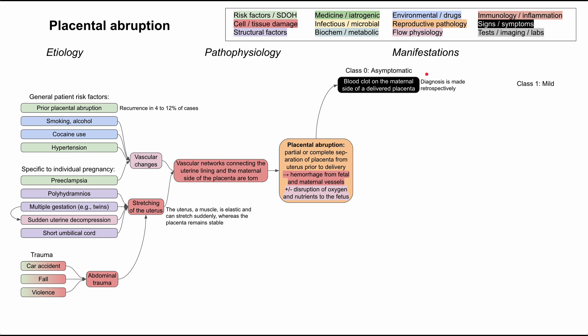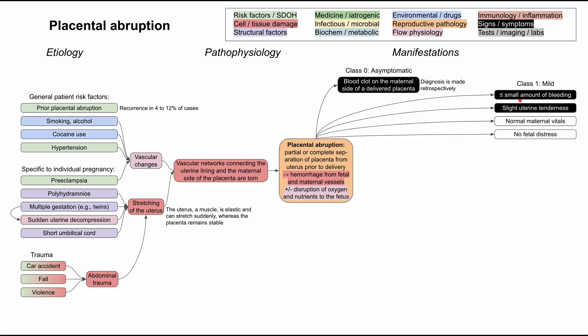Class one is considered mild. In class one, you have up to a small amount of bleeding, and you might have slight uterine tenderness. It's possible with all gradations of placental abruption to have no vaginal bleeding, but in class one you could have up to a small amount. There are also pertinent negatives in the mild class: mom has normal vital signs — she doesn't have hypotension or tachycardia — and baby does not have any fetal distress. Baby's heart rate has been consistent, with no decelerations, and baby is still moving as normal.